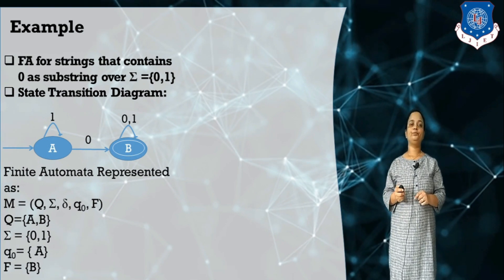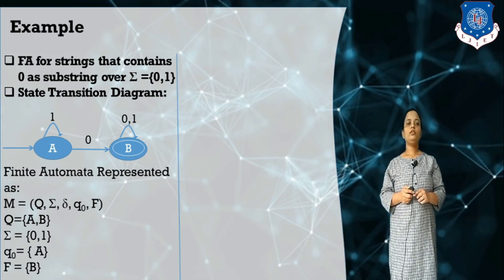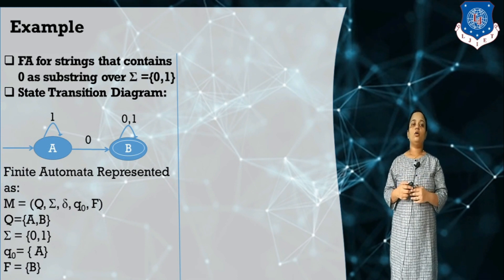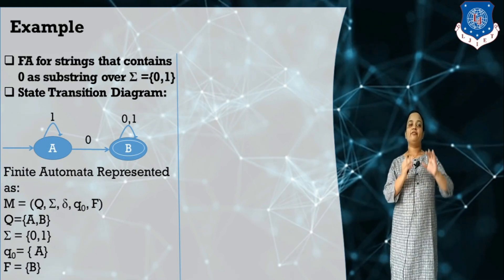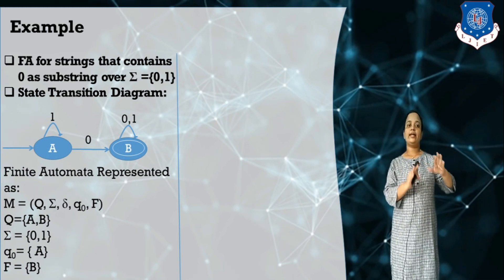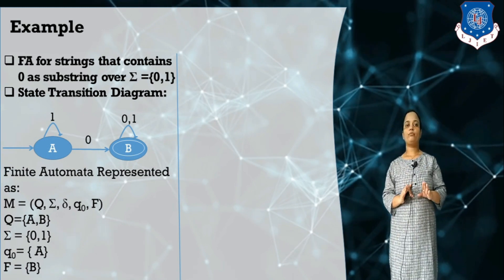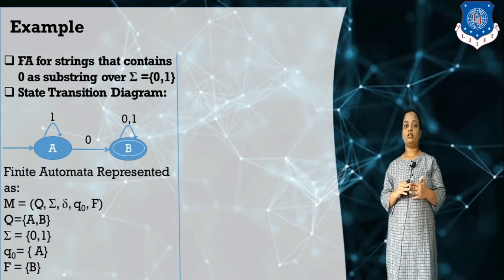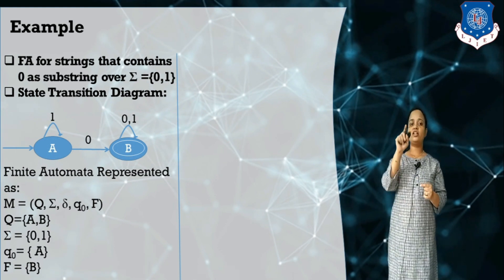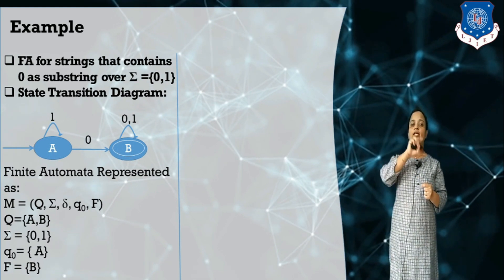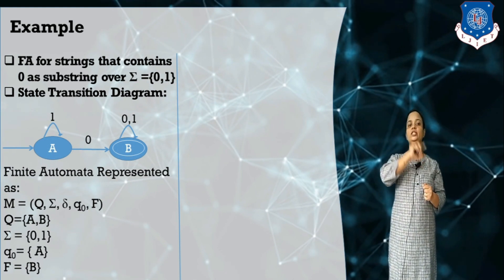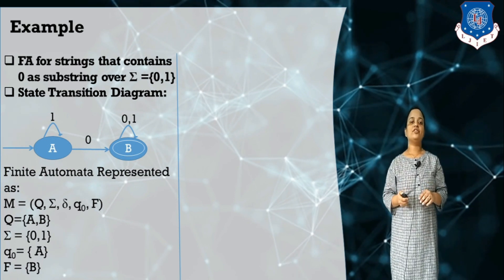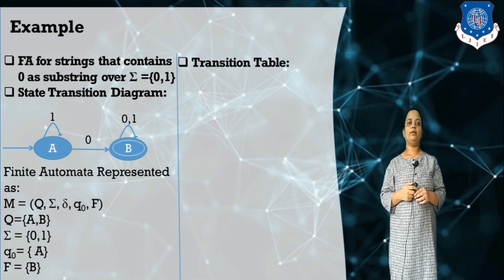Sigma indicates the alphabet. The arrows contain the symbols 0 or 1 — A has a self-loop on 1, A to B contains symbol 0, and B has a self-loop on both 0 and 1. So sigma is {0, 1}. Now I want to define the transition function using a transition table. This table contains the current state and the next state, where the next state depends on the input symbol read.